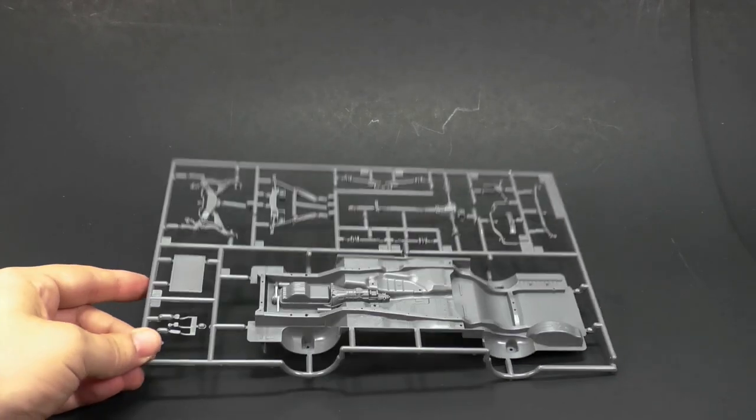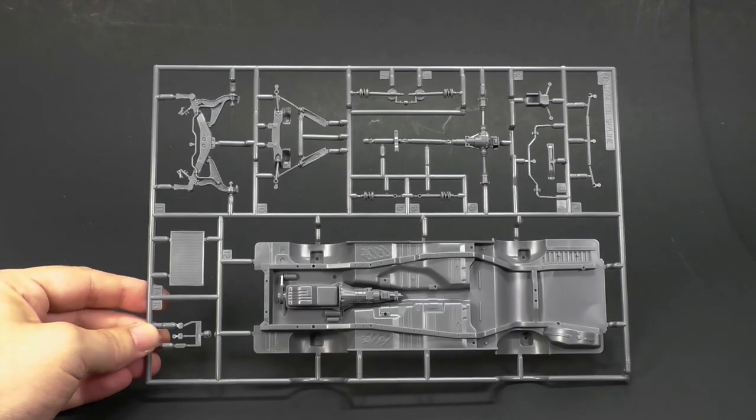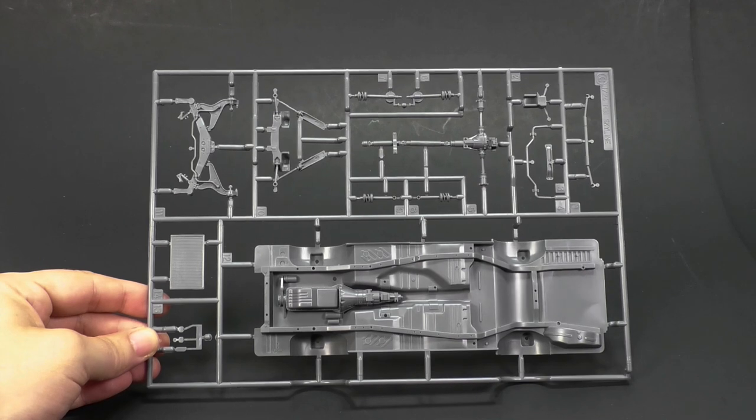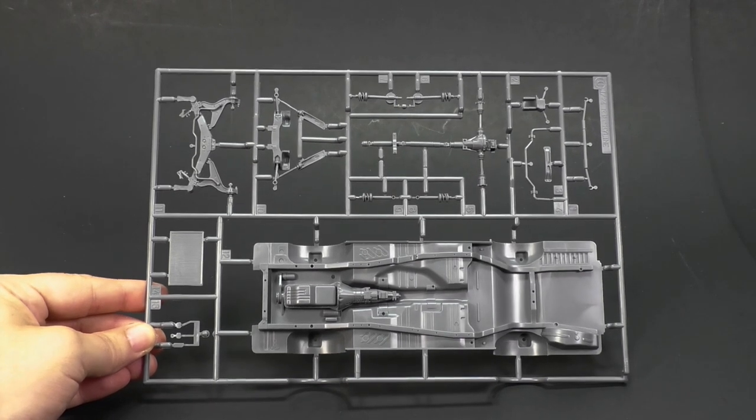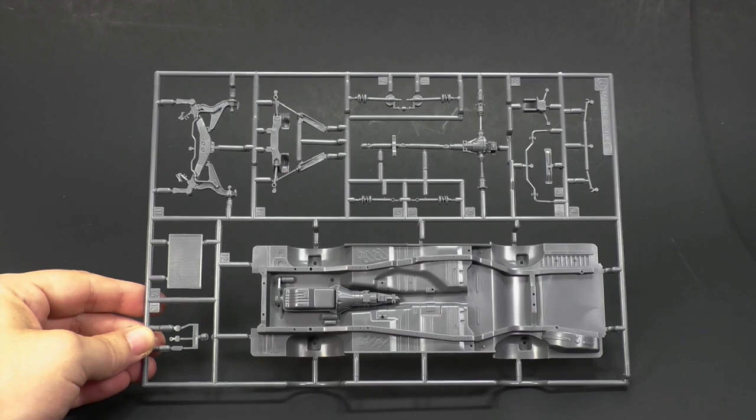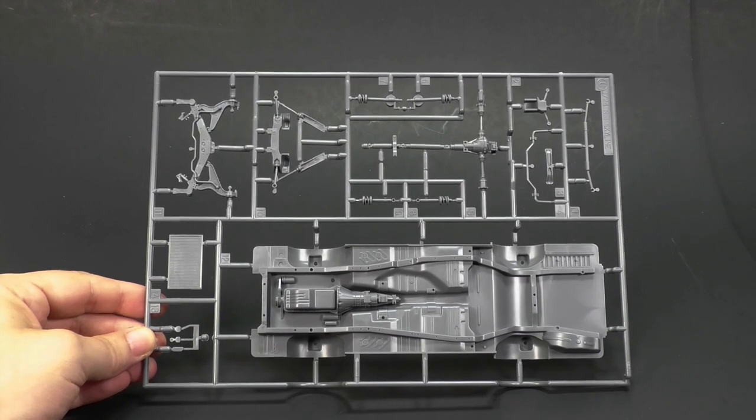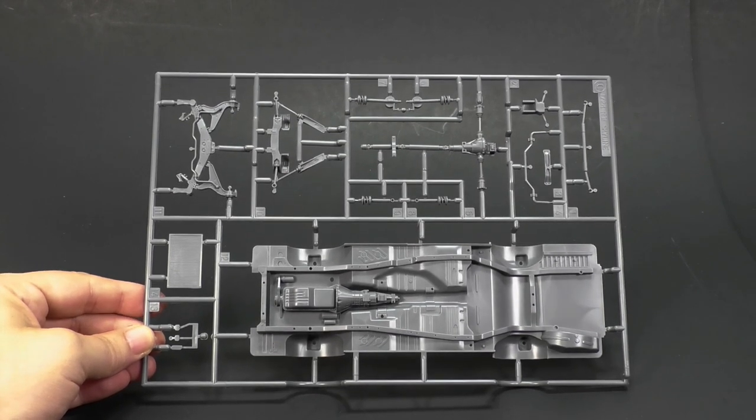And moving right along now to the parts trees. You can see this time, these parts are going to be molded in a gray. Better than blue, I guess. This parts tree is going to be pretty much identical. This is identical to the race car version as well.